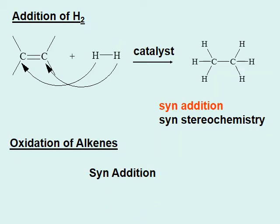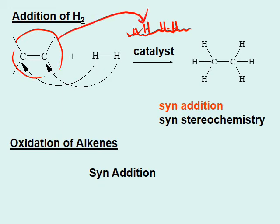Addition of hydrogen, on the other hand, takes place from the same side of the plane. We can understand this by considering the role of the catalyst. If you think about the surface of a catalyst — usually a metal — hydrogen first gets bonded to that catalyst and remains on its surface. Then the alkene has to come to the surface, where these hydrogens are already sitting.